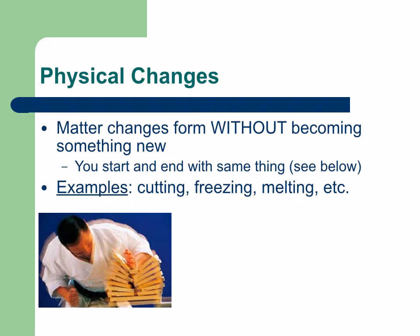Physical changes are when matter changes form without becoming something new — you start and you end with the same thing. In this picture, a man is karate chopping a couple blocks of wood. It ends up being a different shape, but not a different substance. Examples include cutting, freezing, melting — anything that changes the appearance. If it changes something observable with the five senses, then it's a physical change.